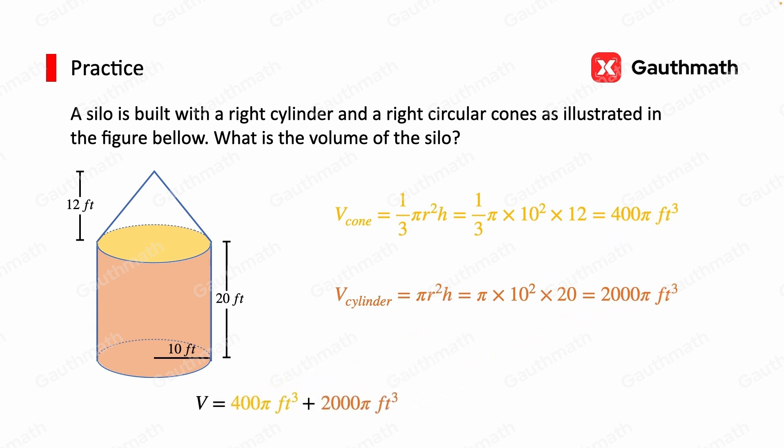And finally, we can sum up the two volumes to find the total volume. That's 400 pi cubic feet plus 2,000 pi cubic feet, which is 2,400 pi cubic feet, which is approximately 7,536 cubic feet.